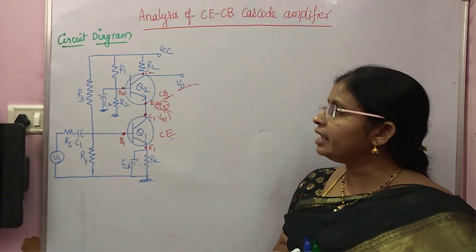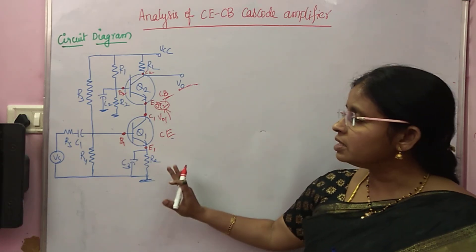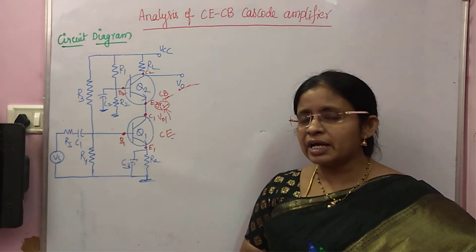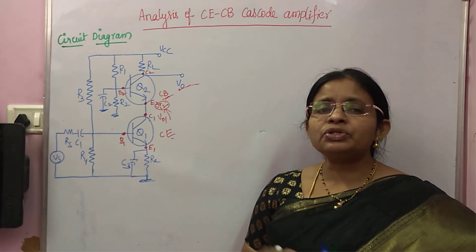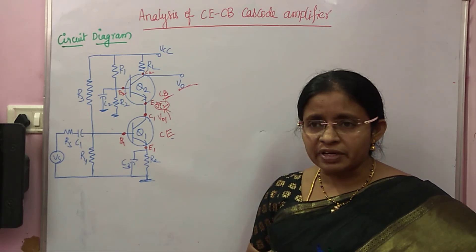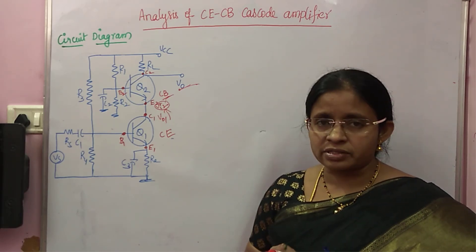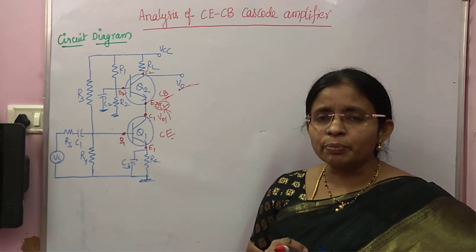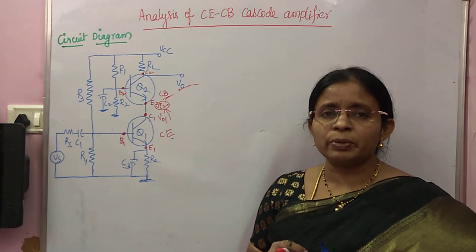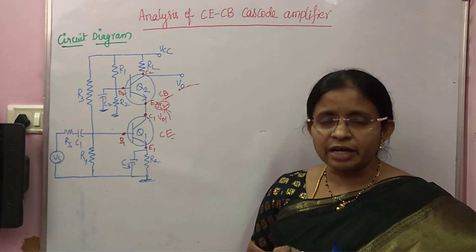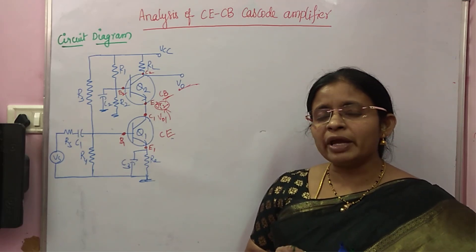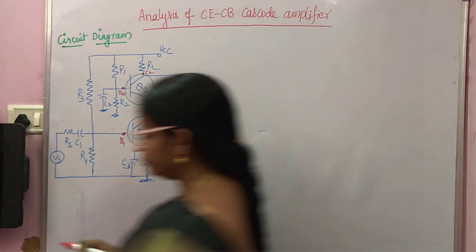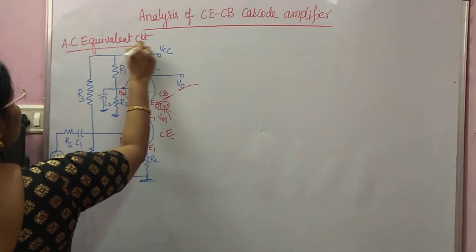First I will draw the AC equivalent circuit for this CE-CB cascode amplifier. To draw the AC equivalent circuit we have to follow two things: first, make the DC supply equal to zero, and second, make all the capacitors short.